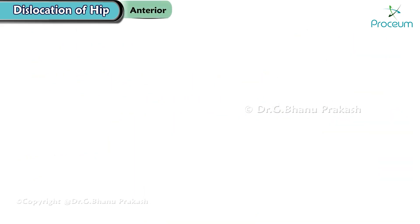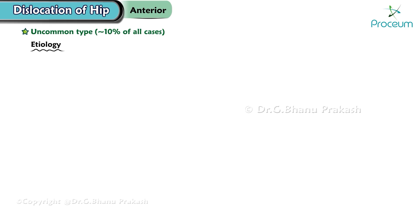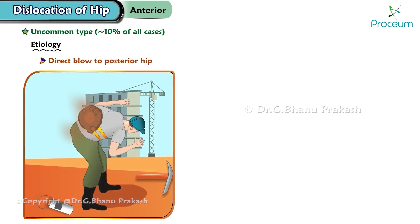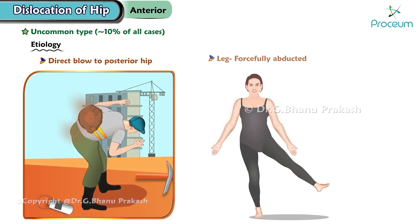Anterior hip dislocation. It's a relatively uncommon type of hip dislocation, accounting for approximately 10% of all cases. It occurs when there is a direct blow to the posterior hip or when the leg is forcibly abducted.